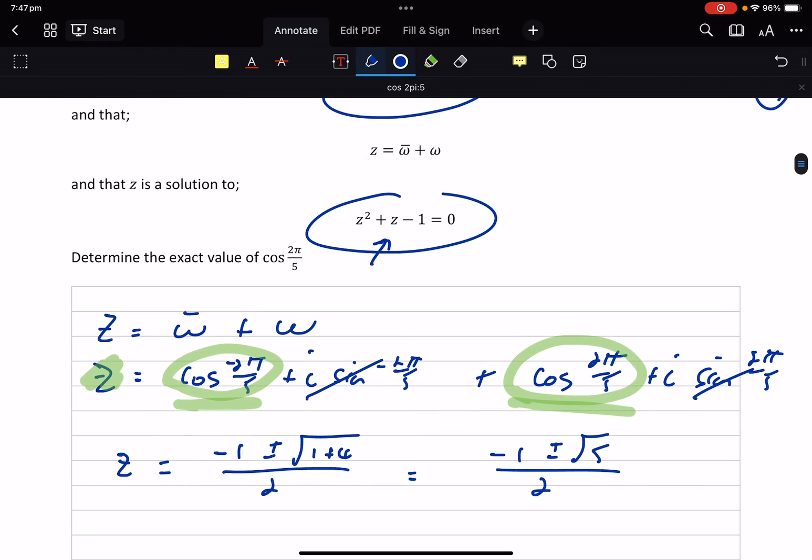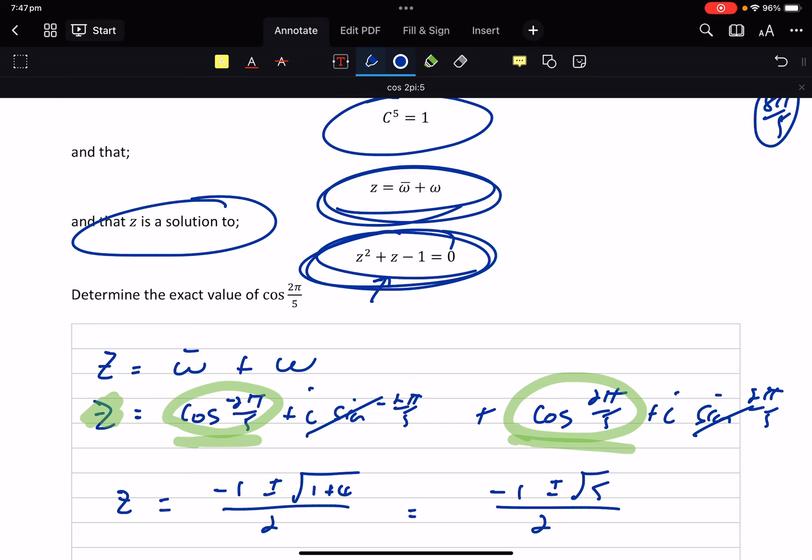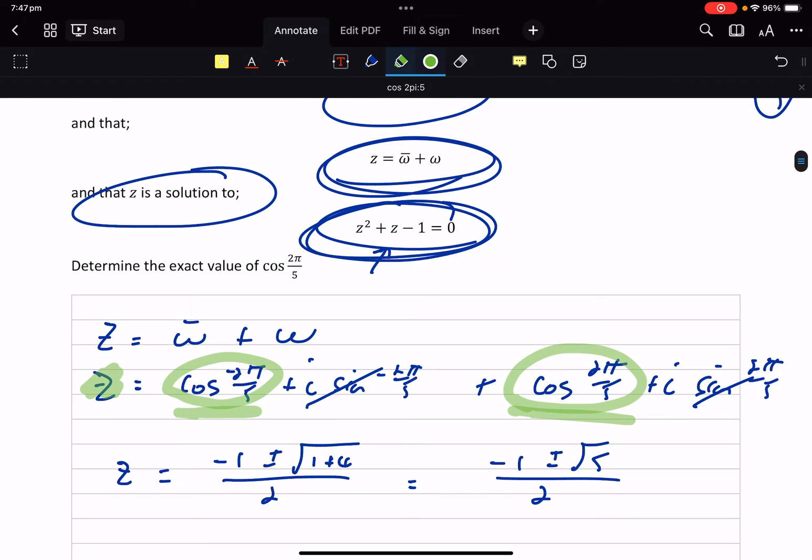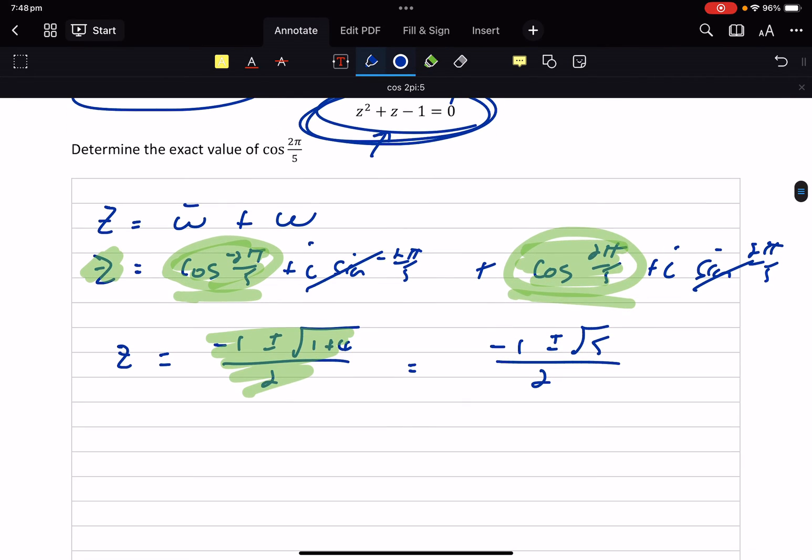We are told that the solution to the quadratic is the same as the two roots of unity added together. So therefore, and you can see that this z has no complex parts, which is why I'm going to link the real component of that z with the quadratic equation.